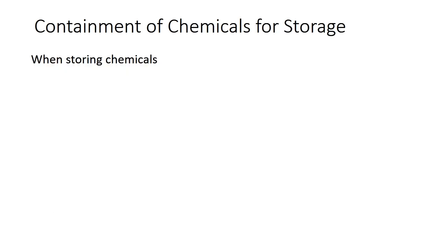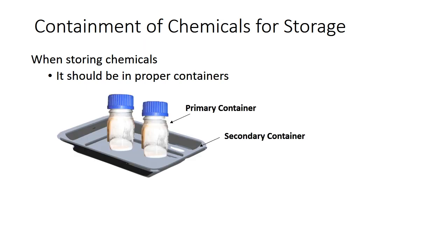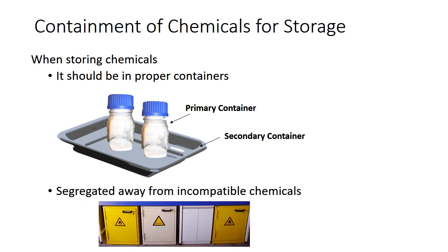When storing chemicals, they should be kept in proper containers. For primary containers, the material must be able to withstand long-term exposure and be non-reactive to the chemical without deteriorating — for example, glass or plastic. For secondary containers, they are to hold the primary container and retain any leakage from it. Chemicals stored should also be segregated away from incompatible chemicals.